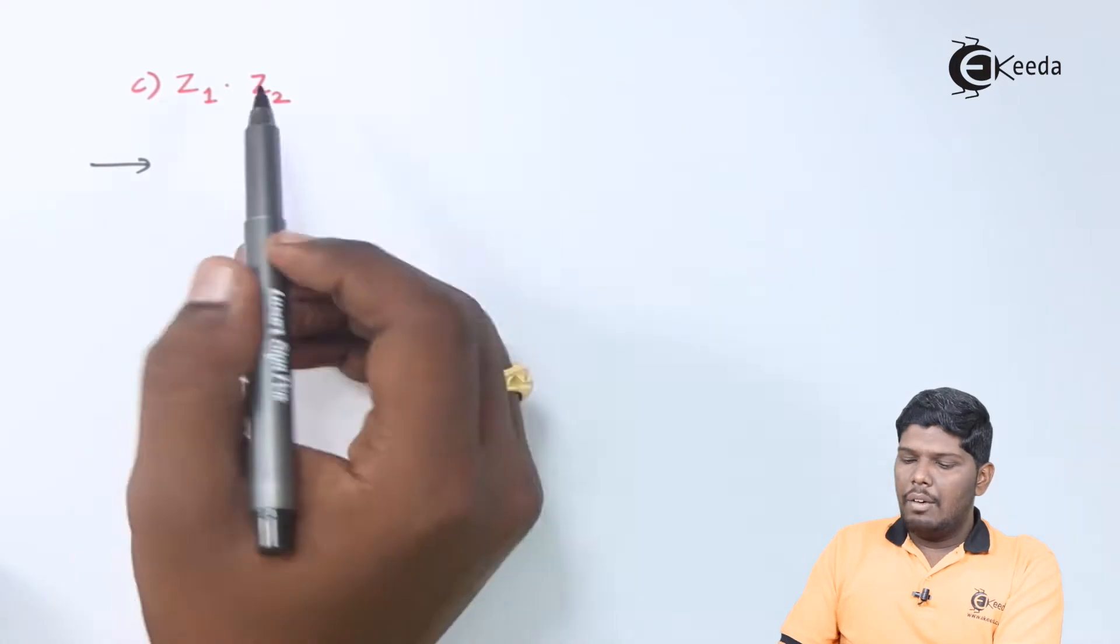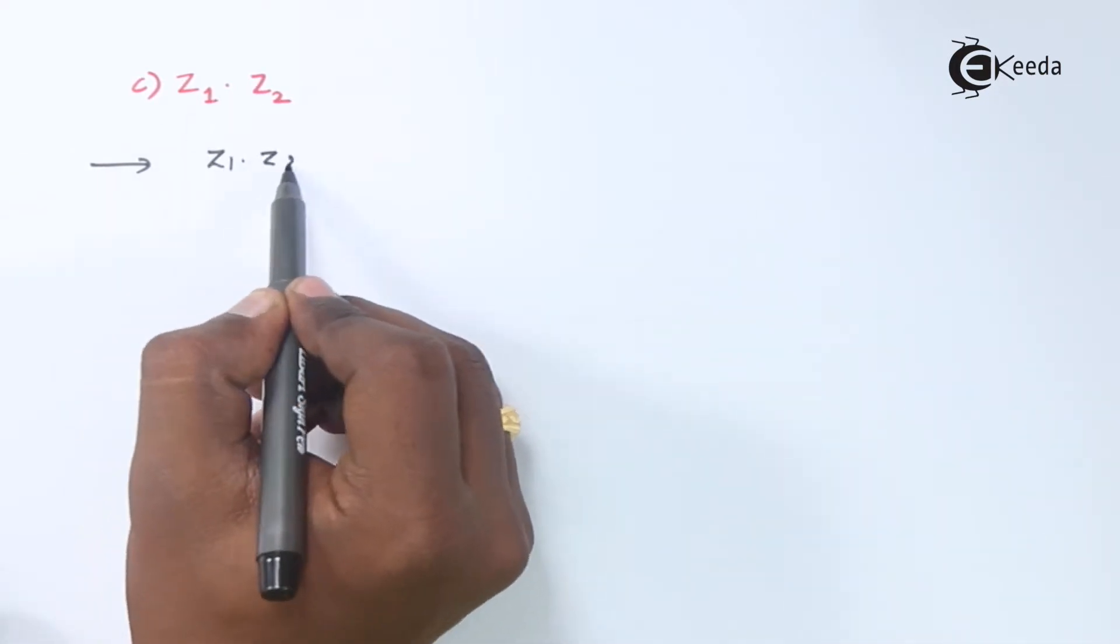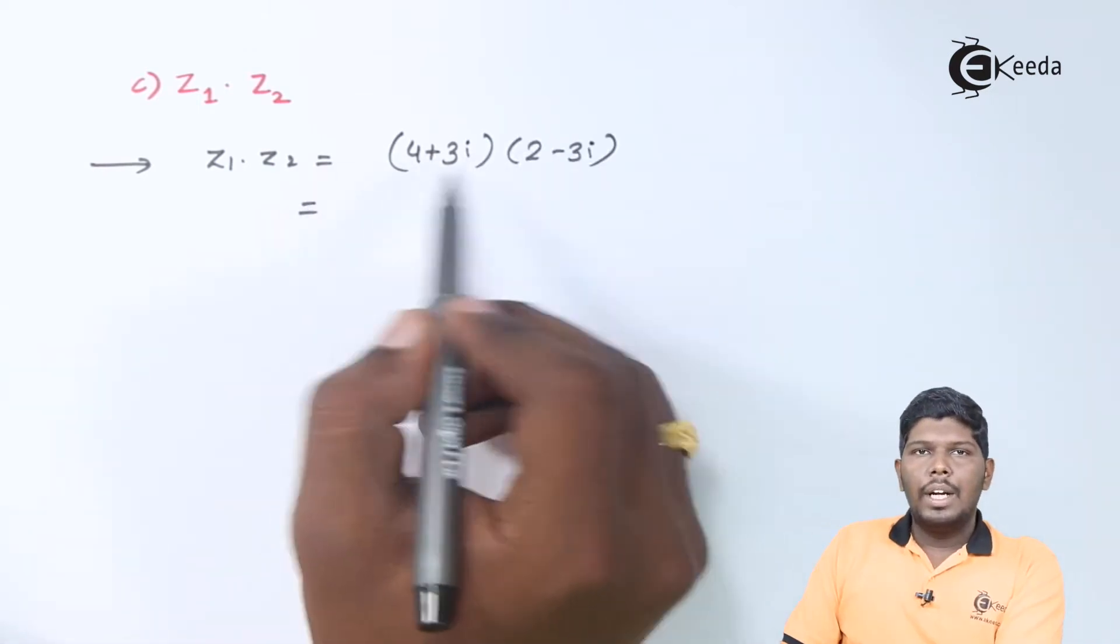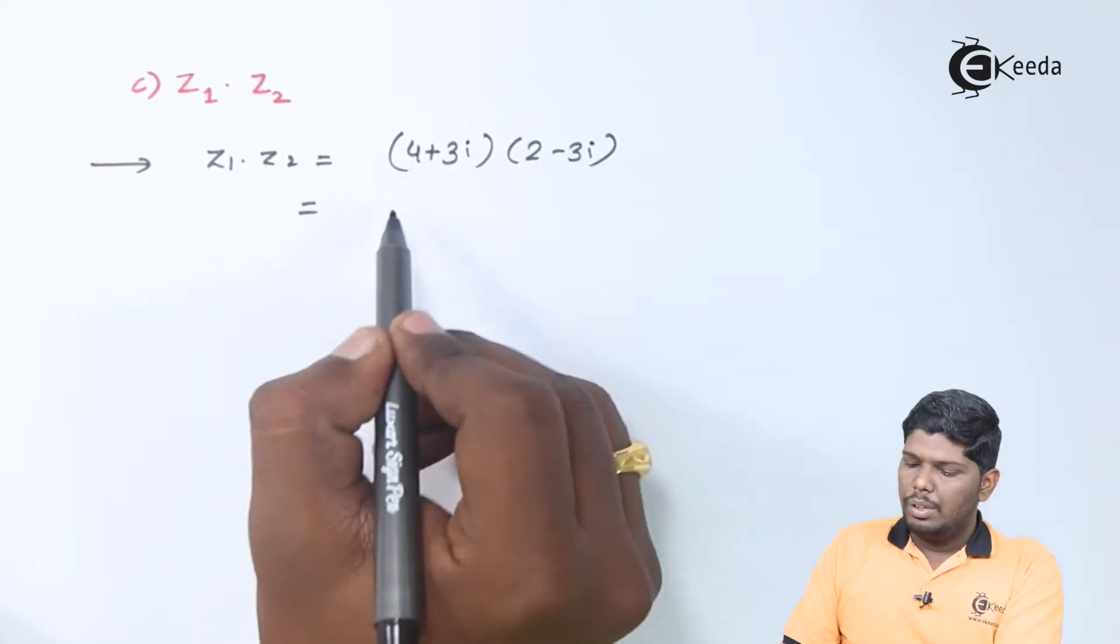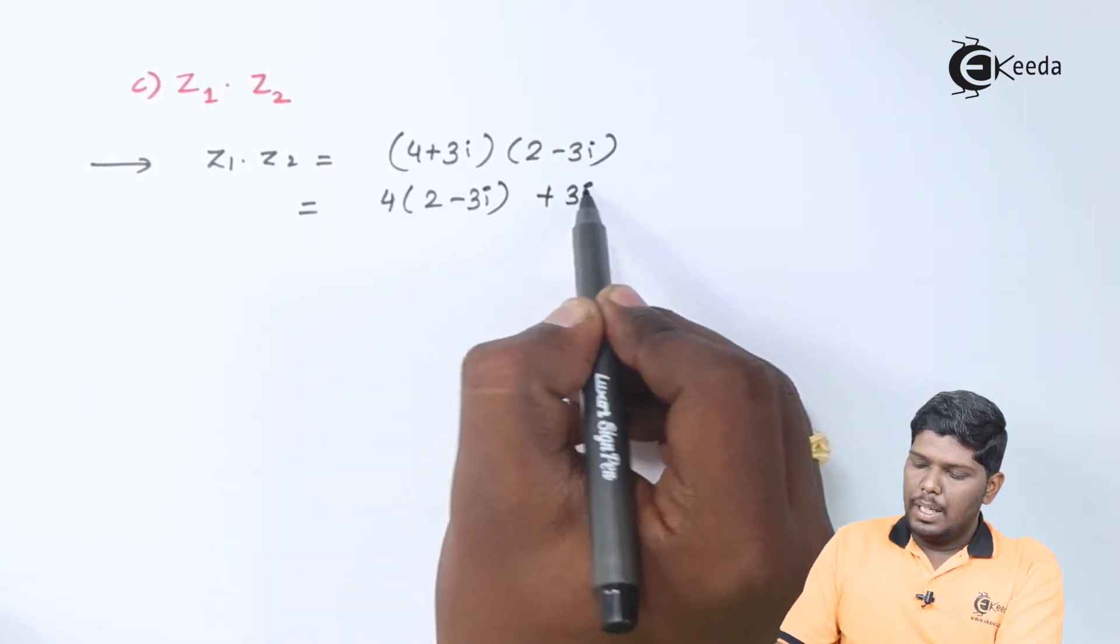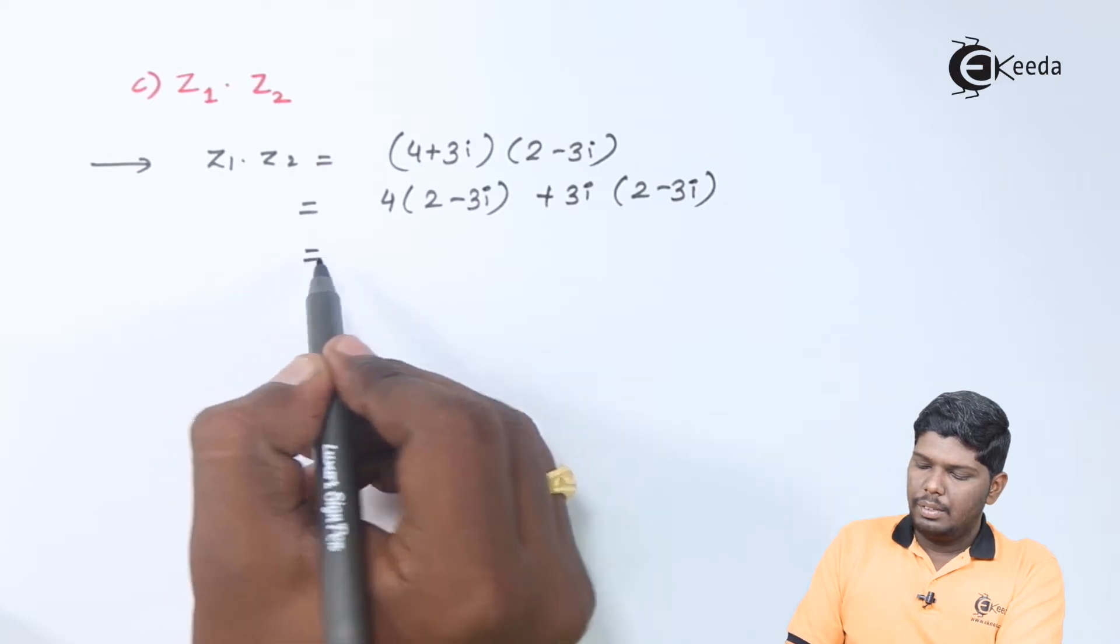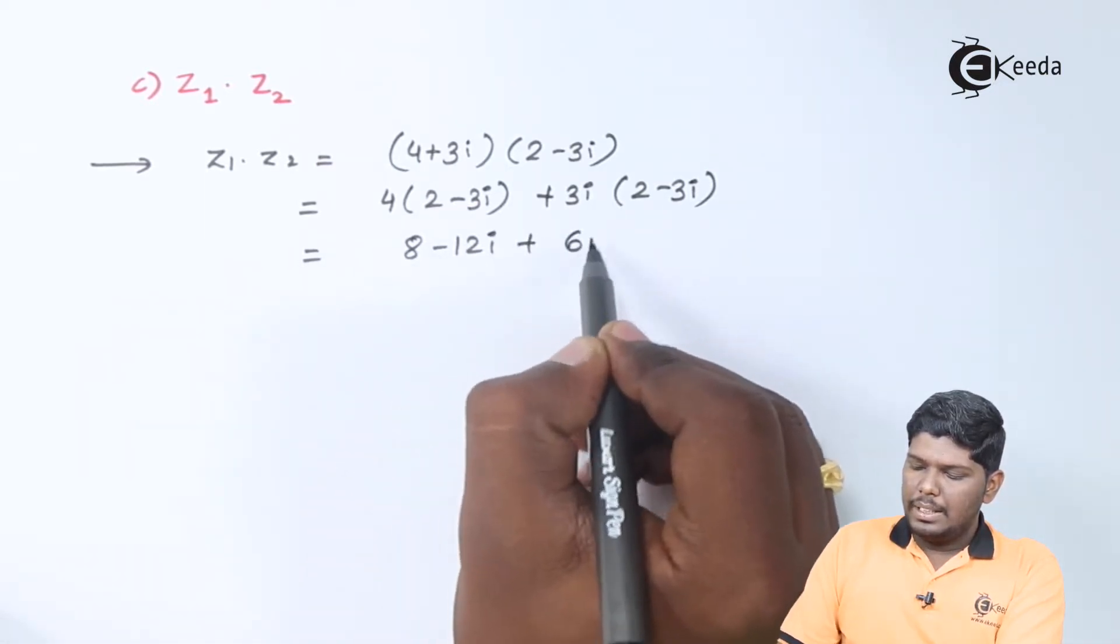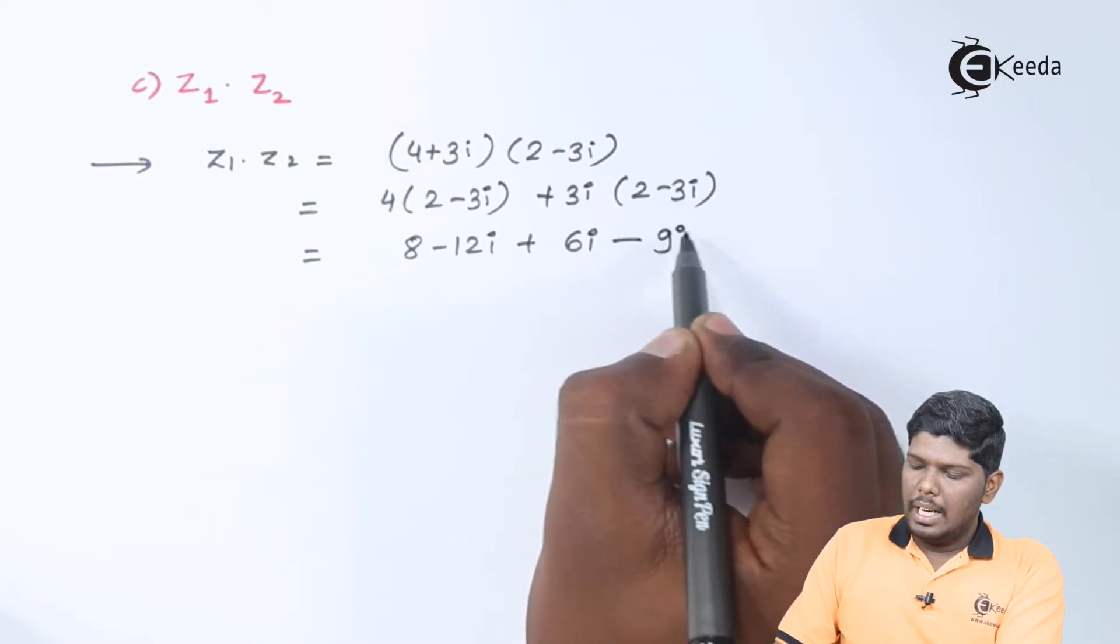In the third, they have asked you the product of z1 and z2. Now, let us multiply z1 and z2. We have 4 into 2 minus 3i plus 3i into 2 minus 3i. That will give you 8 minus 12i plus 6i minus 9i square.